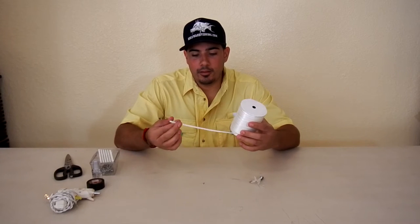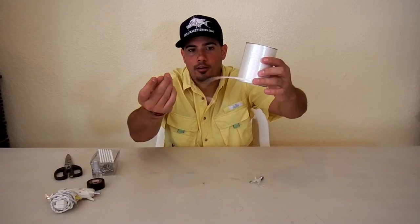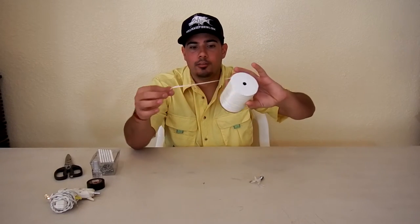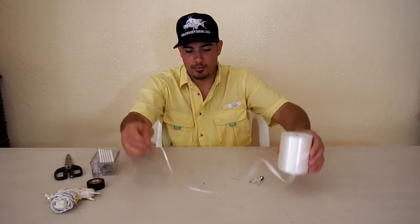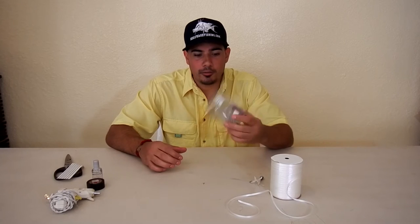First off, you're going to need a white or this is like a pearlish color balloon line. This is the one that you just tie to the balloons. You're going to want like a 6-0, 5-0, 6-0 hook.